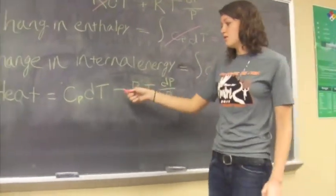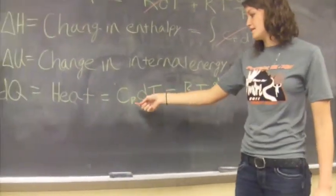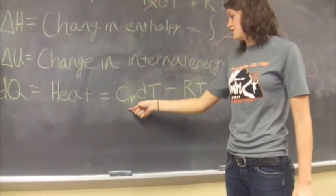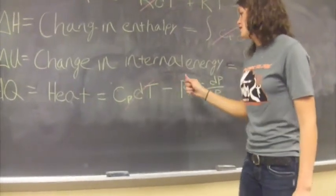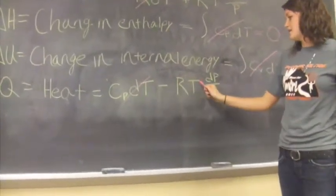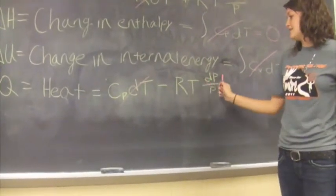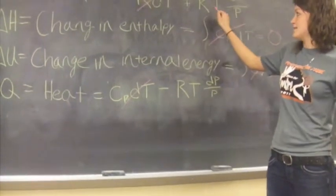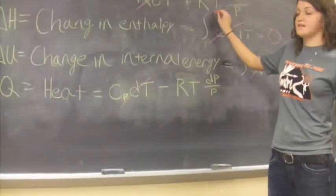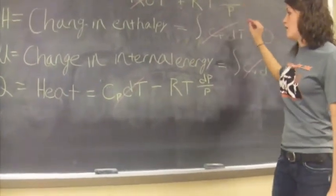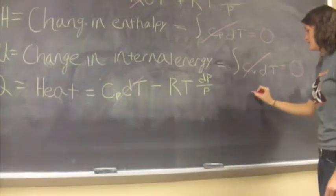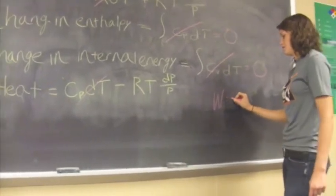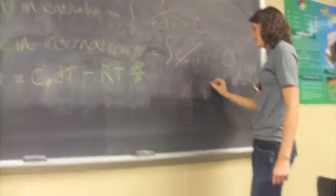And then Q — this factor drops out, because once again, the change in T. And so, as you can see, negative RT, RT, dP over P is just the opposite sign of RT dP over P. So that leads to: work is equal to the negative energy.